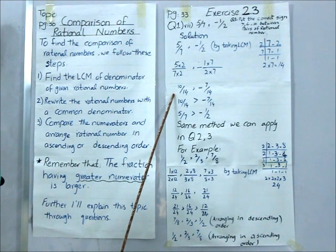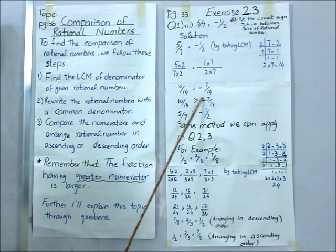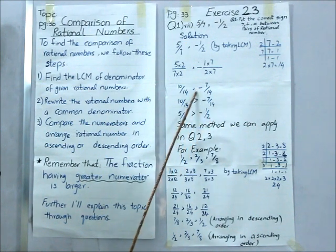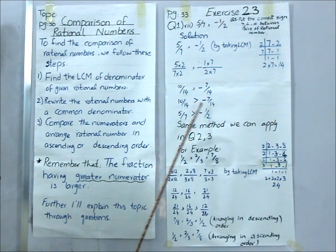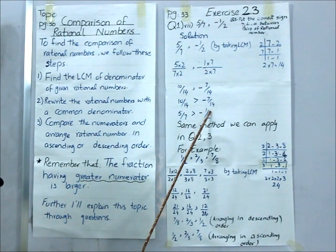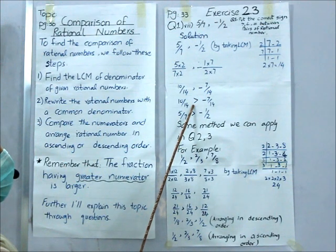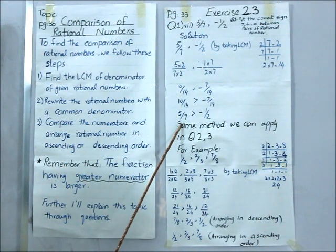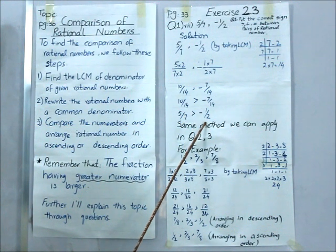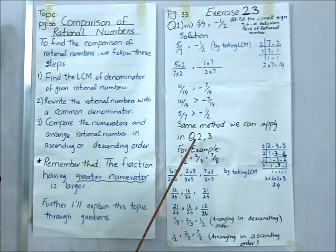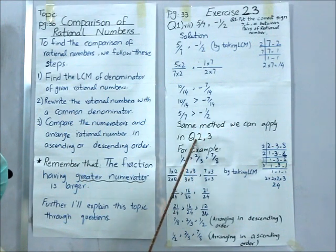Here, one rational number is positive and one is negative. Every negative number has less value compared to a positive number. So the positive number is considered greater and the negative number always has a lesser value. Therefore, 10 by 14 is greater than minus 7 by 14. This is my solution, and putting the comparison sign in the original question: 5 by 7 is greater than minus 1 by 2. Through this same method, we can solve questions 2 and 3 of Exercise 2.3.